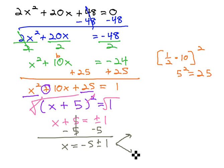And then we can look at those two options where we add and subtract. Negative 5 plus 1 is negative 4. Negative 5 minus 1 is negative 6. And these are our two solutions for the equation, 2x squared plus 20x plus 48 equals 0.